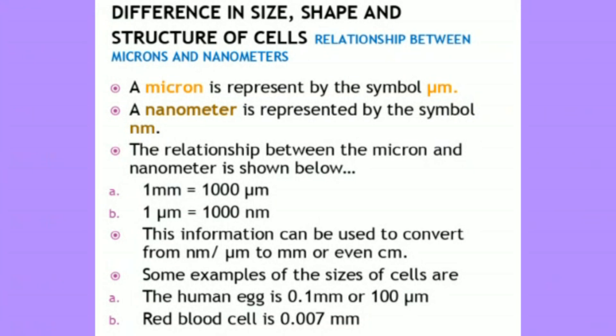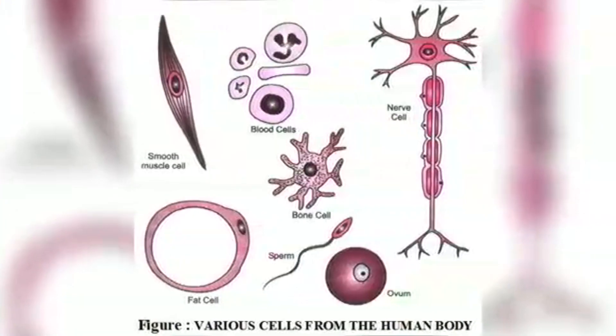Some examples of the size of cells: the human egg is 0.1 mm or 100 microns, and the red blood cell is 0.007 mm.